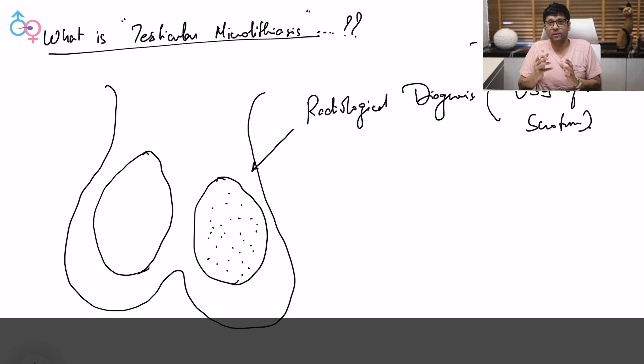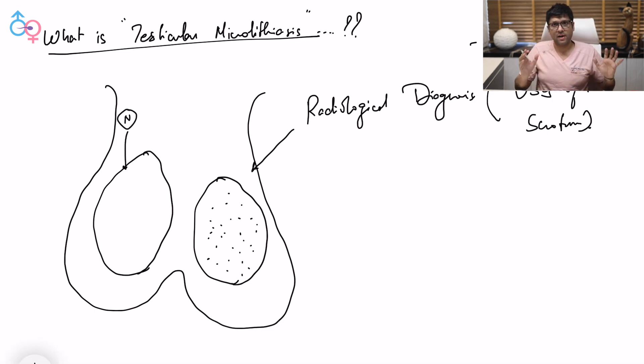When you move your probe over the testes, see, this is how a normal testes is going to be - normal architecture, normal structure. A testes with microlithiasis is going to show these type of spots inside.